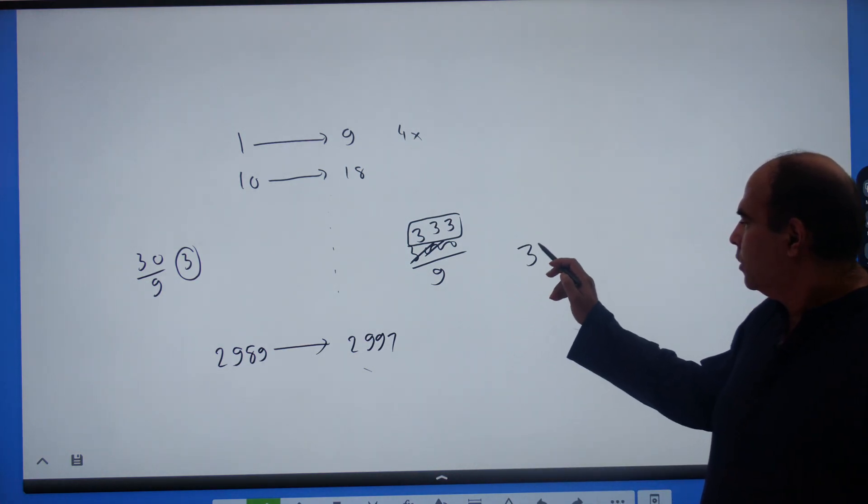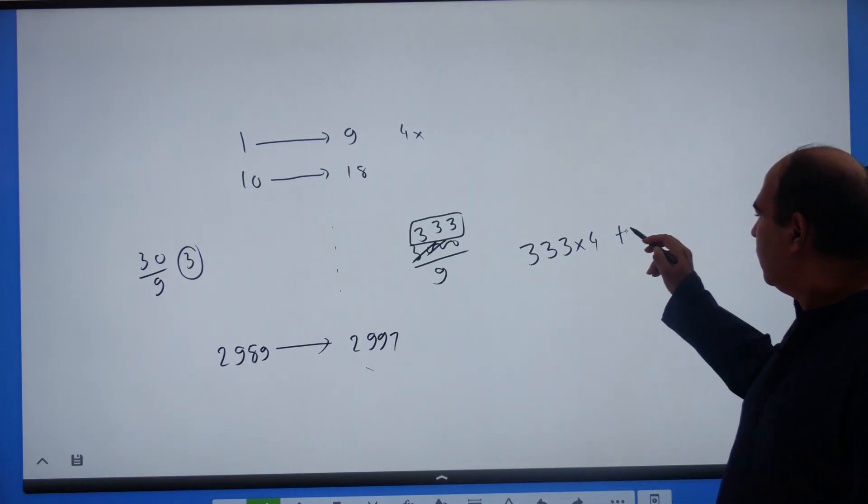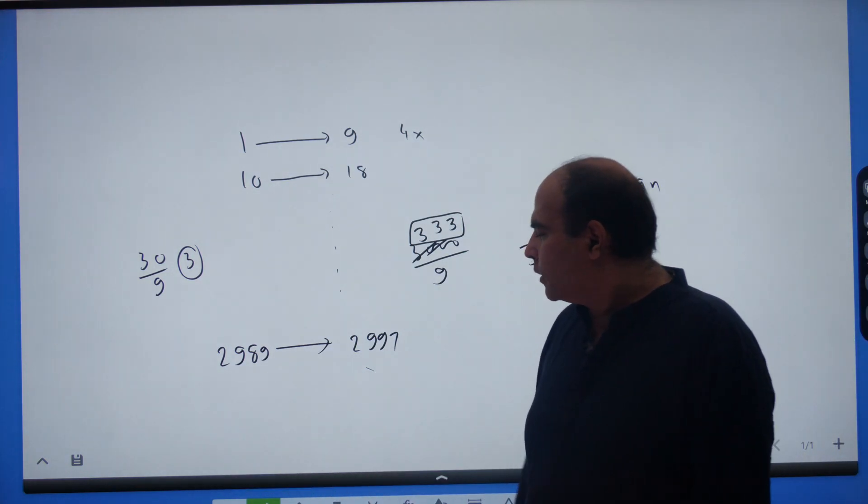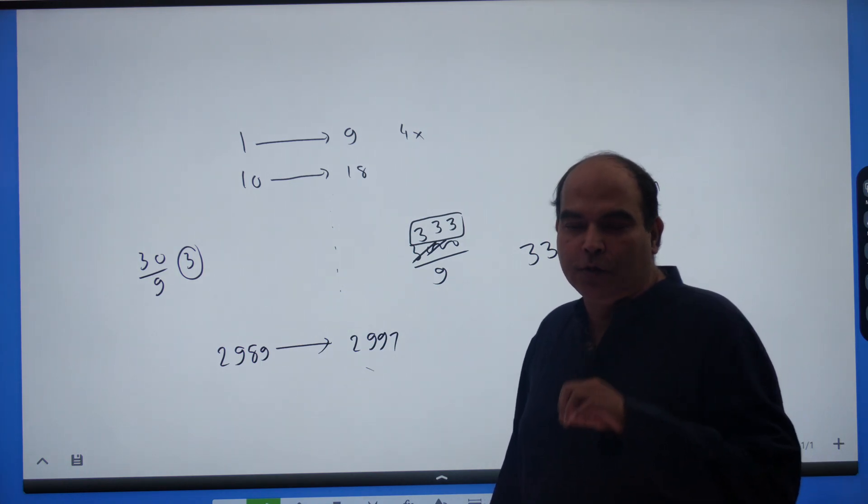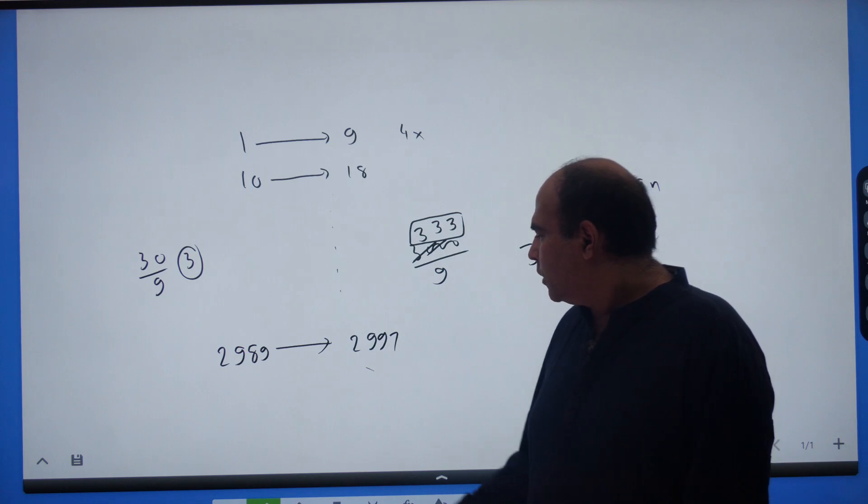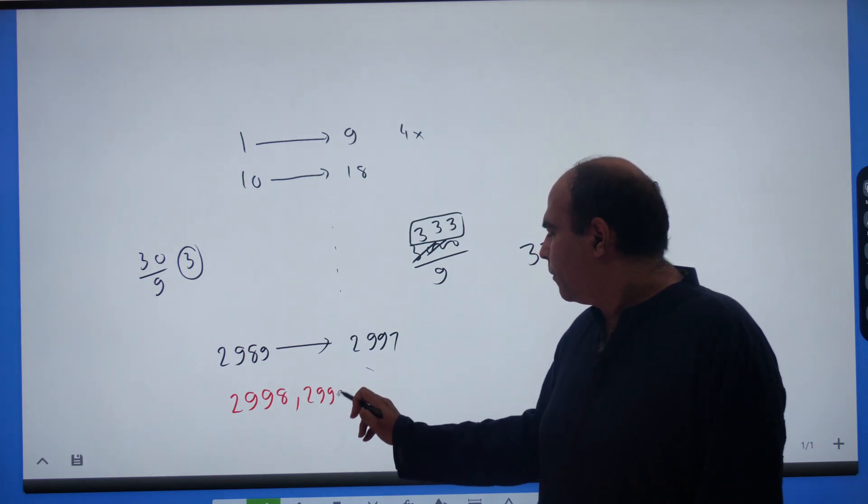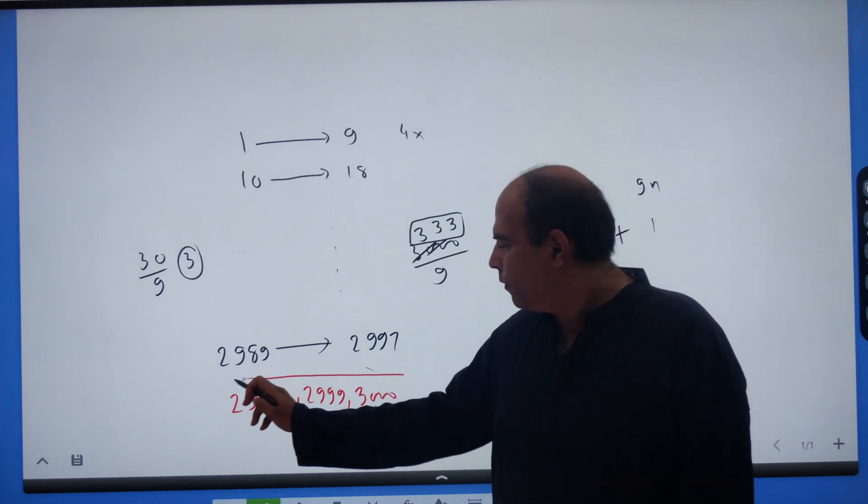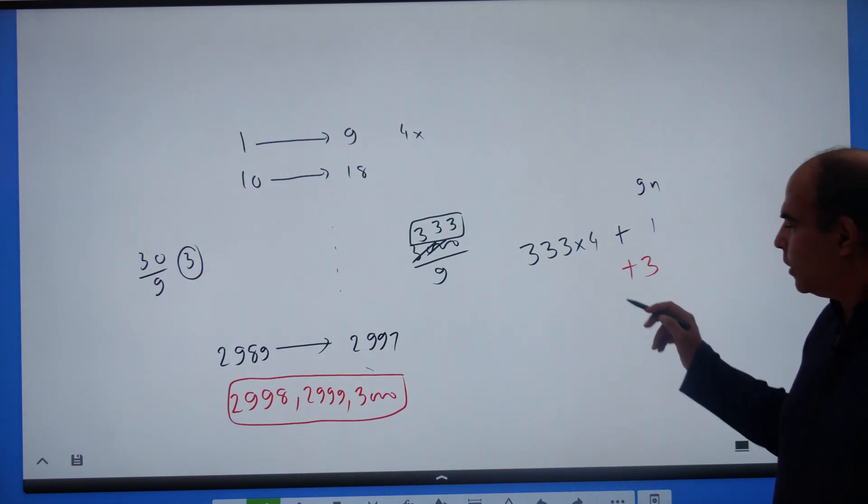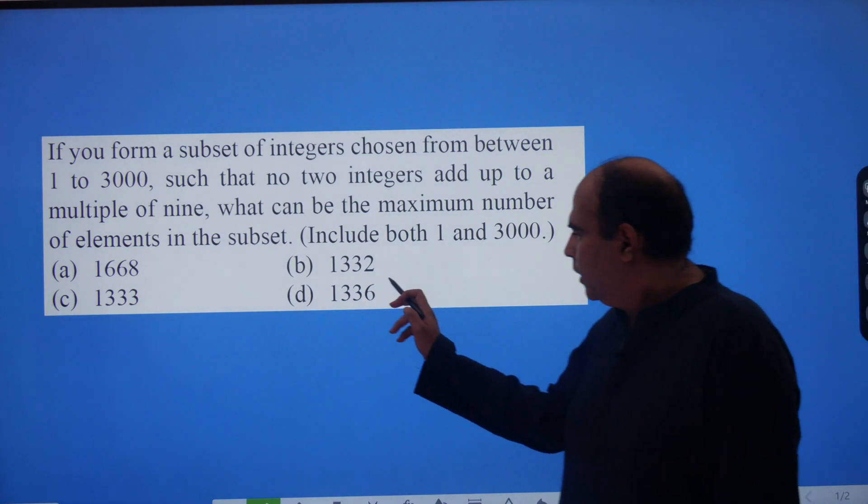So, there are 333 complete sets. So, in each of these sets, you can take 4 numbers. You can take one number of 9n. Any one number, 9, 18, 2997, you can choose which one you want. As I said, the value does not matter. What matters is how many of them can you take because the question is not about which ones you take. The question is about how many maximum number of numbers happen in the subset. And then when you go to the last 3 numbers, you have the incomplete set 2998, 2999 and 3000. Since you are going up to 3000, including 3000, in the incomplete set, there are 3 more numbers. So, plus 3 will give me 1332 plus 1 plus 3, 1336. Hence, the answer to this question is 1336.